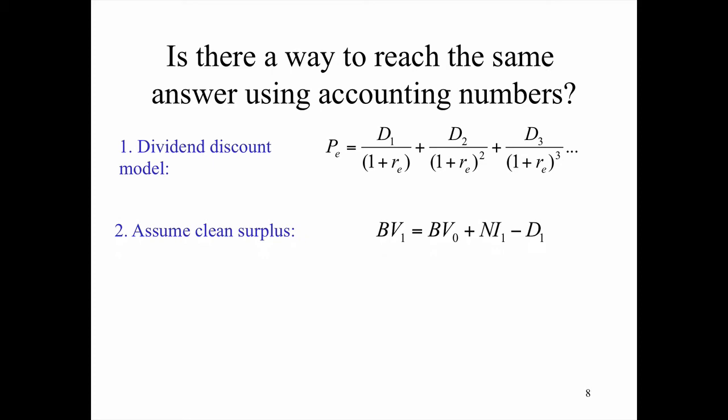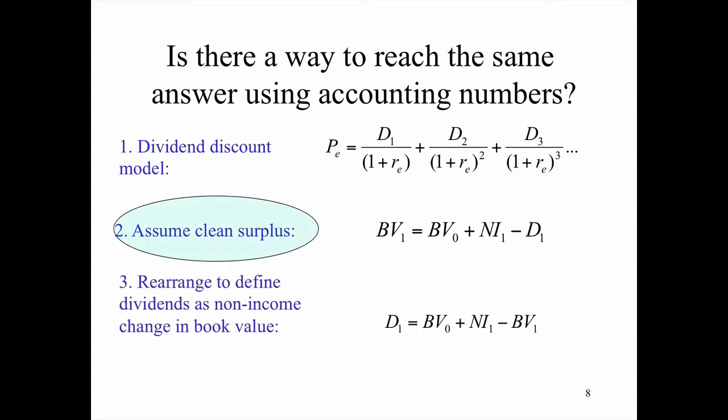With clean surplus, we are saying that the book value at the end of the period, that is shareholders' equity off the balance sheet at the end of the period, is equal to shareholders' equity at the beginning of the period plus net income minus dividends for the year. It gives us the ending book value. We can rearrange this by adding D_1 to both sides, that cancels this out, and subtracting BV_1 from both sides. What it's saying is that if we know book value at the beginning of the period, shareholder's equity at the beginning of the period, shareholder's equity at the end of the period, and net income, we can forecast dividends.